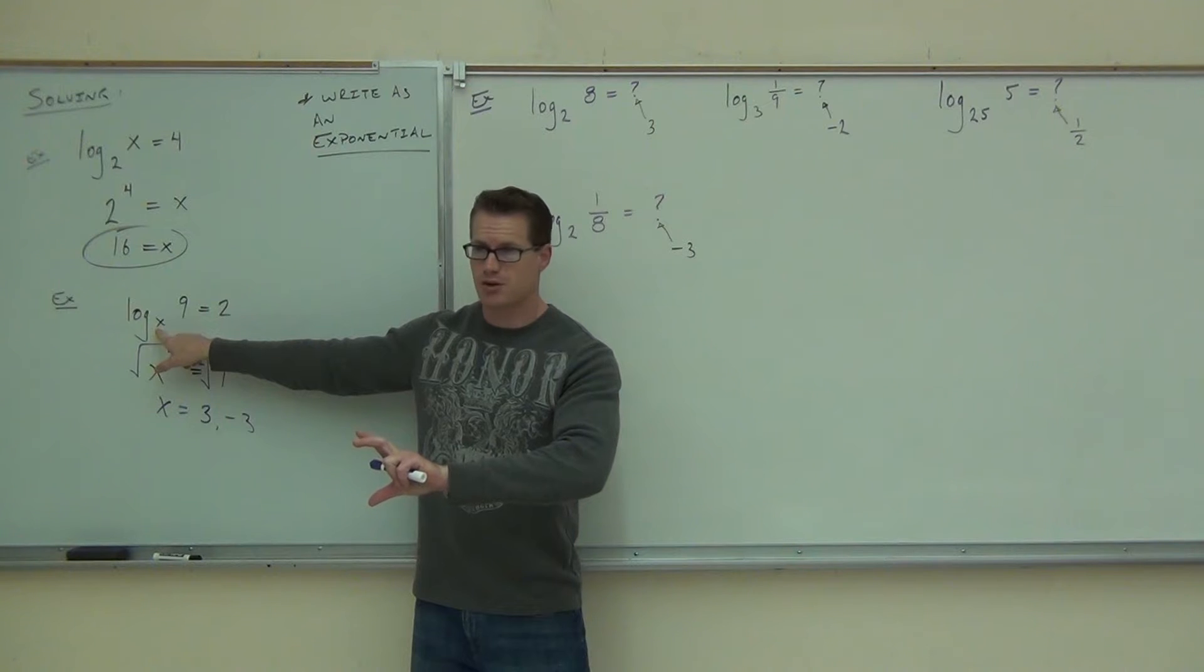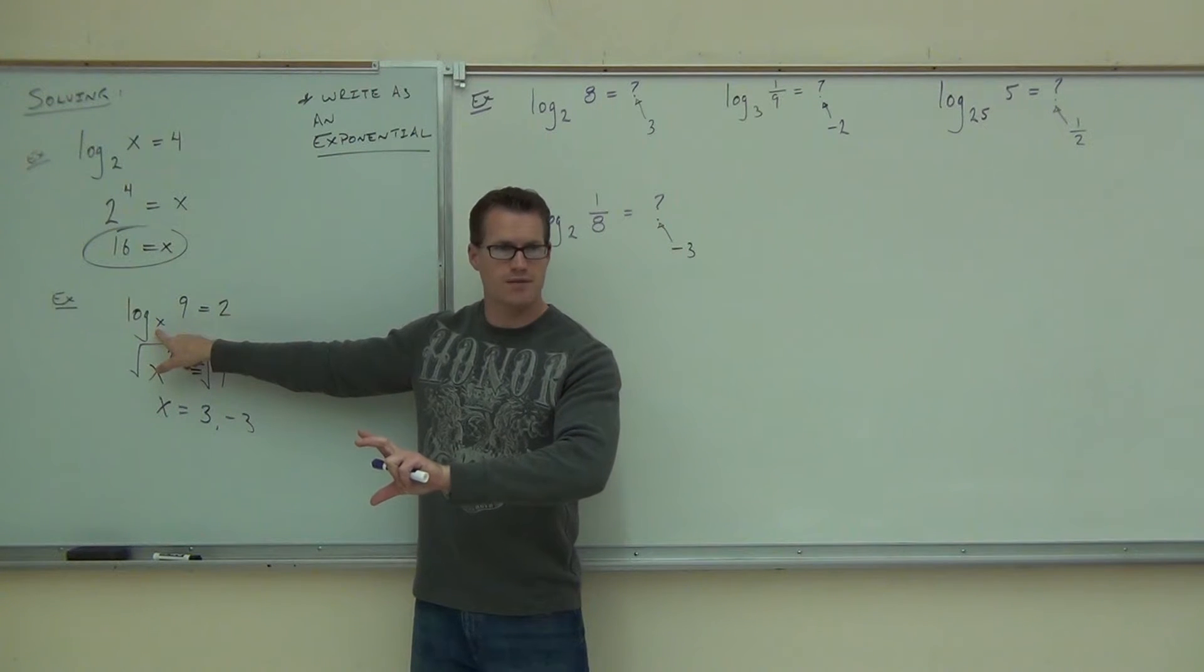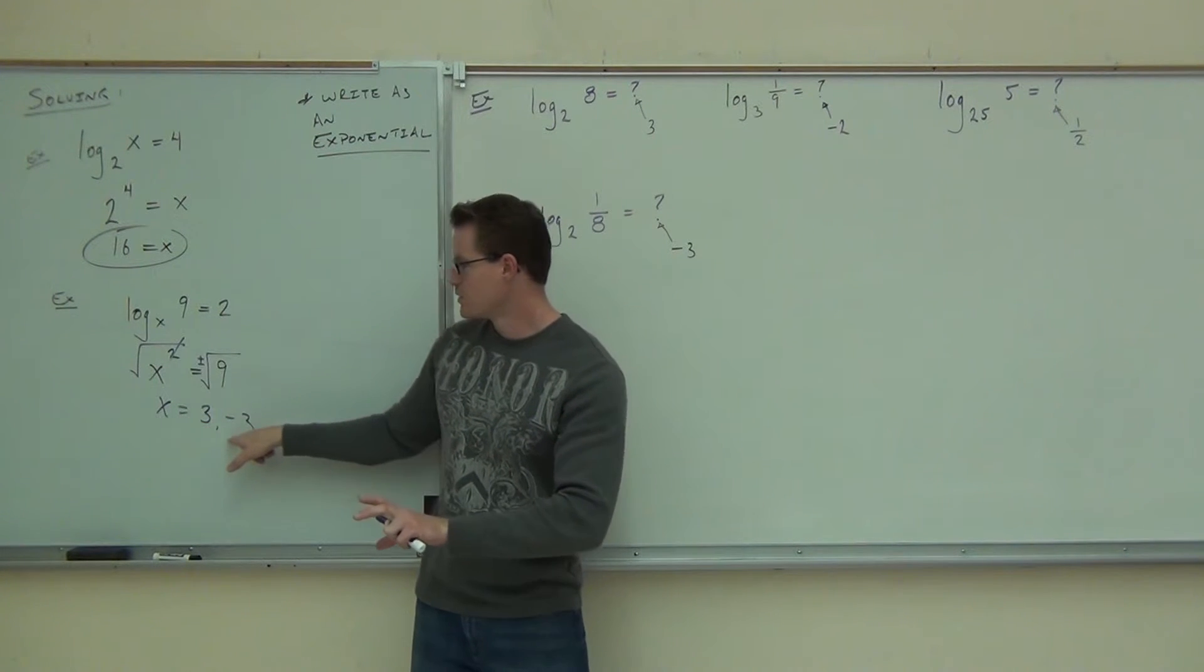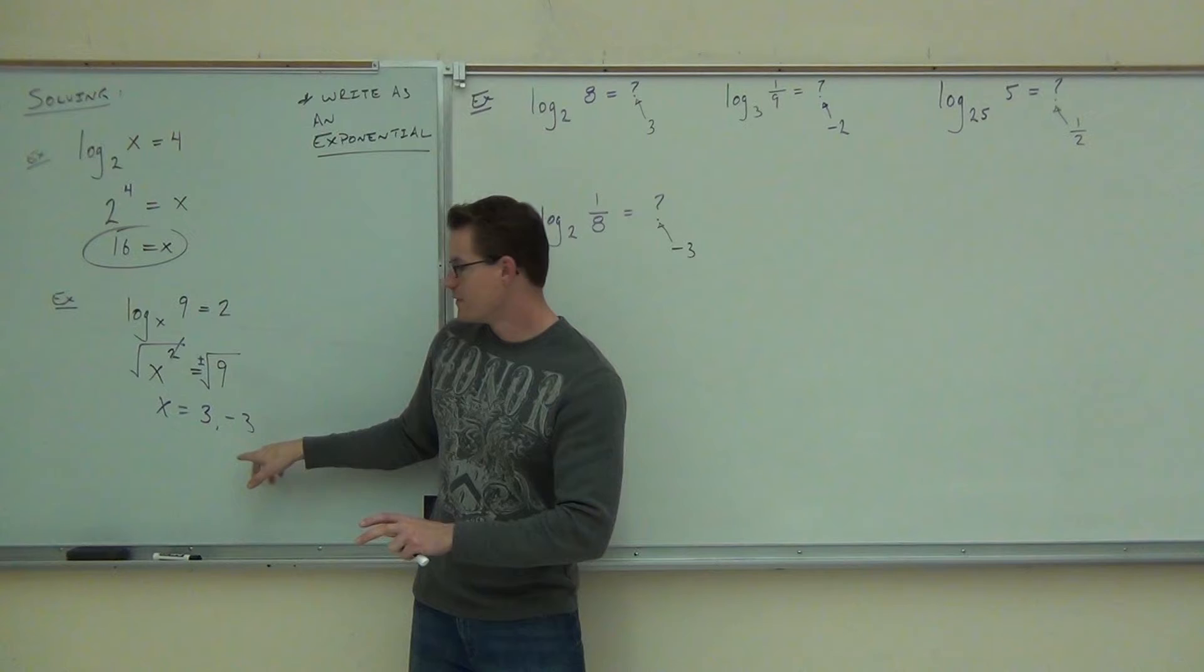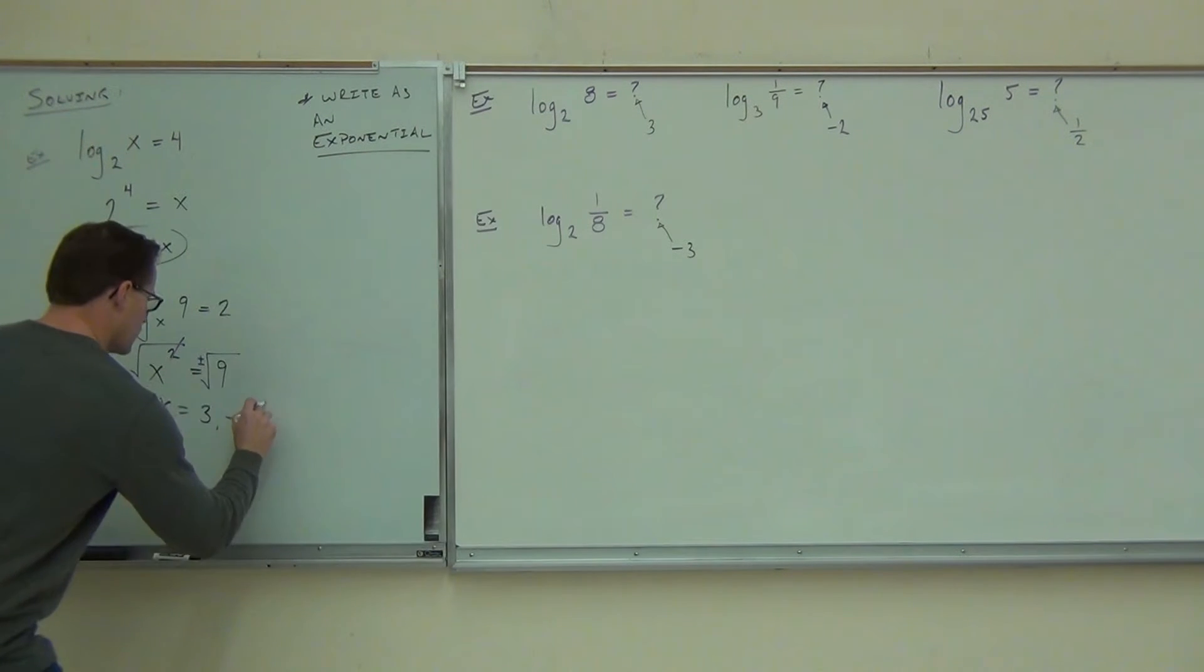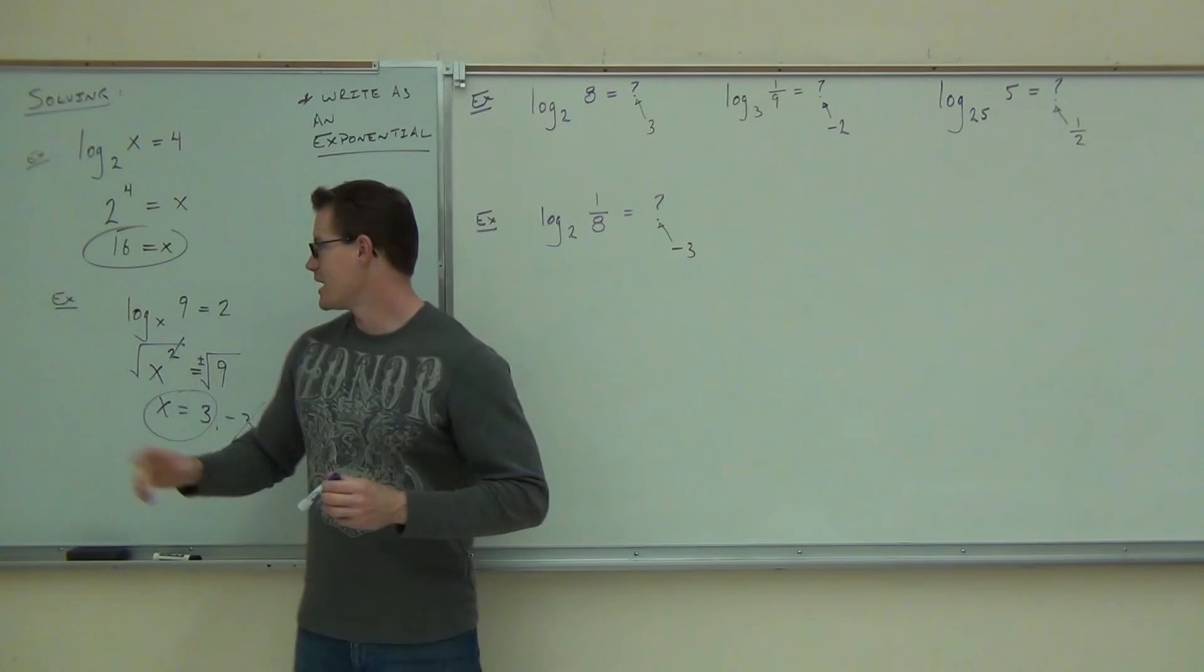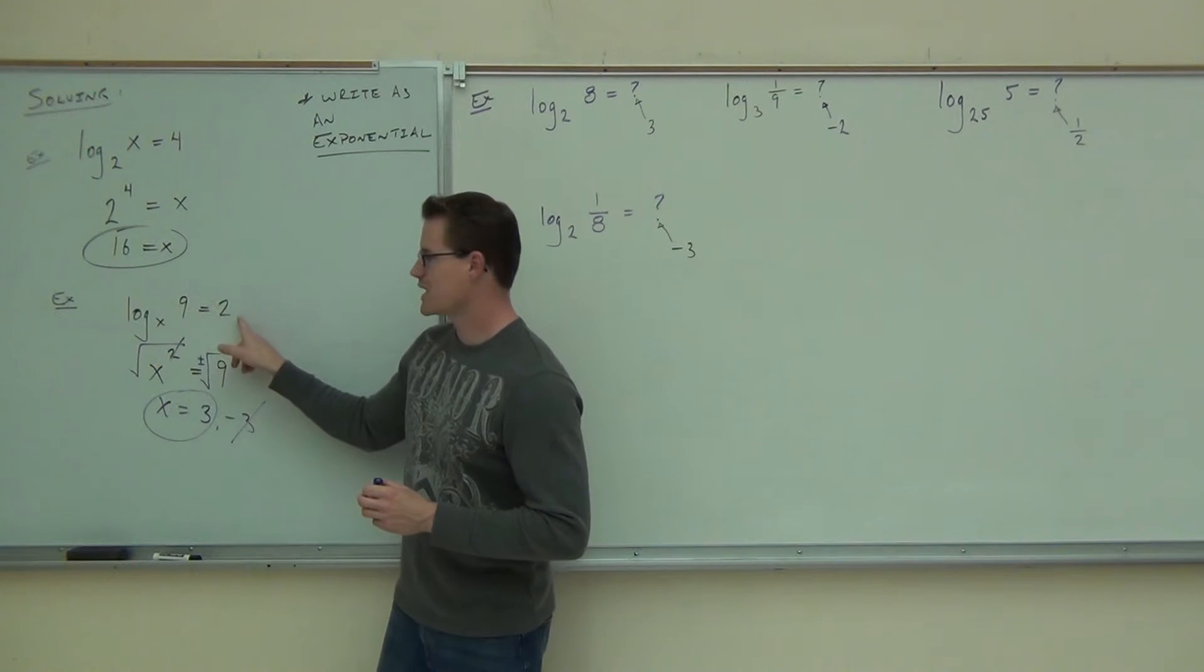Your base has some conditions to it. First thing, it's never going to be equal to 1. Second thing, it's going to be greater than 0. Do you have that on your paper? Which one of these is not greater than 0? That negative 3 is a false solution. You're going to cross it out.